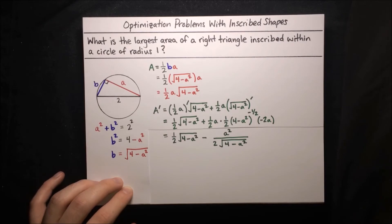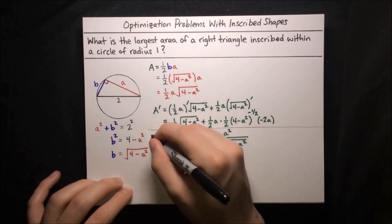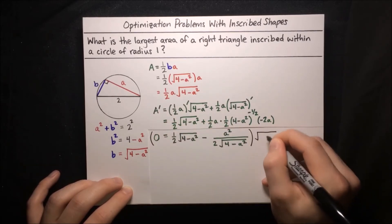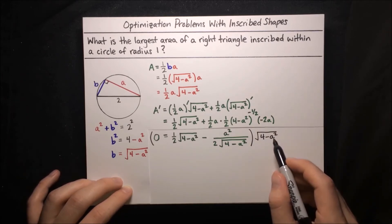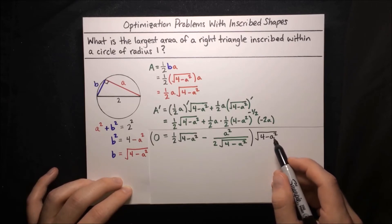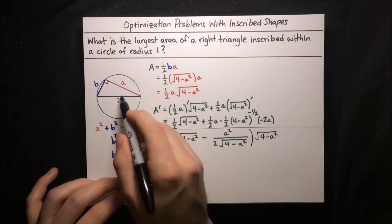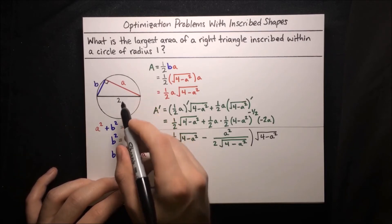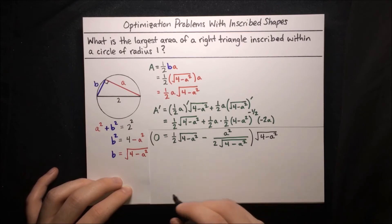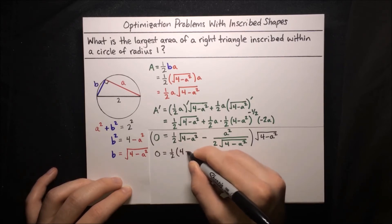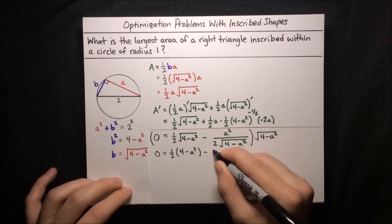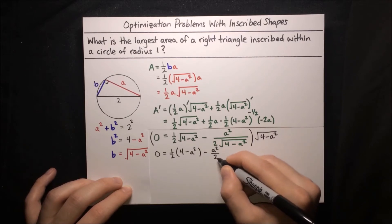We want to find the stationary points, so we set that derivative equal to zero. The equation looks rough with all these square roots, but we can multiply through by the square root of 4 minus a squared. We're allowed to do that because a is not equal to 2 — 2 is the hypotenuse, whereas a is just a leg, and the leg is always smaller than the hypotenuse. This simplifies the equation to zero equals one half times 4 minus a squared, minus a squared over 2.